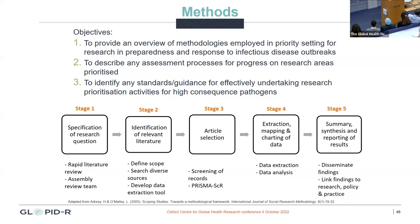Since this is a scoping review, we are using the AXII and NOMALI framework with adaptations from the JBI. We are using the key terms: prioritization, response, methodologies, and their synonyms, plus the high-consequence pathogens list that we compiled.